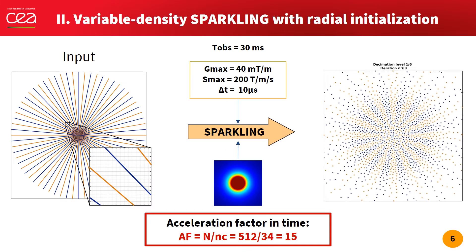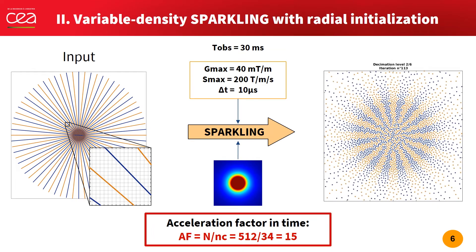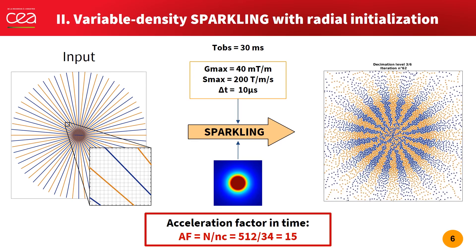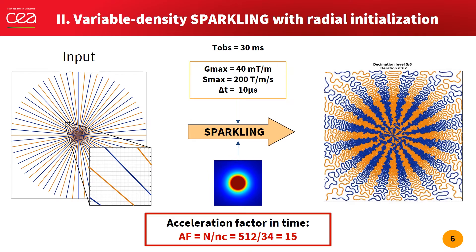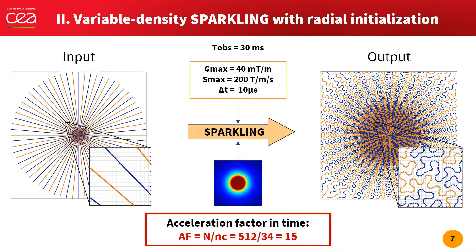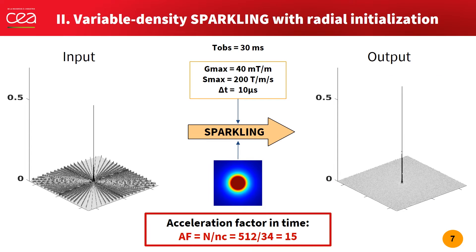Here is how SPARKLING works for a radial in-out initialization and a target variable density. You can see how the multiscale algorithm spreads the samples as much as allowed by the input gradient constraints, while respecting the desired density. If you compare the initial point spread function to the output SPARKLING PSF, you can notice how the algorithm was able to smooth out the structured patterns and provide a well-defined central peak surrounded by a noise-like pattern.